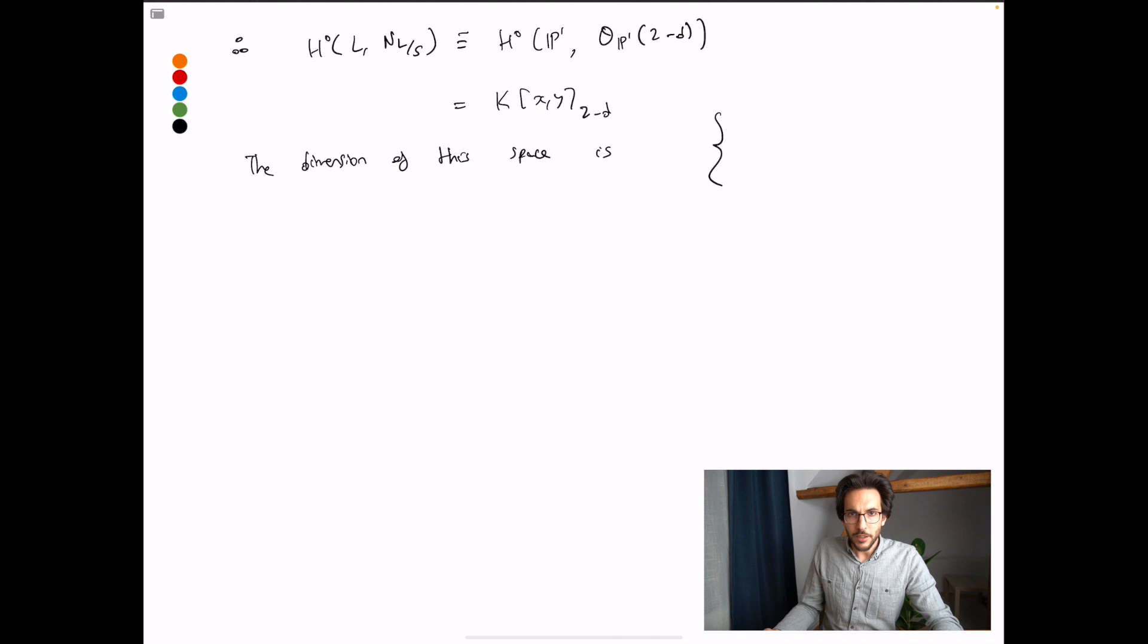So what happens is that the dimension of this space: when D equals 1, when the surface is a plane, this is just linear forms in X and Y. Of course it's a two-dimensional space. When D equals 2, I'm looking at constants. This is a one-dimensional space. And when D is greater than or equal to 3, then of course I would just have the zero space here. The dimension is zero.